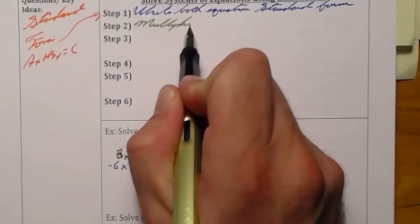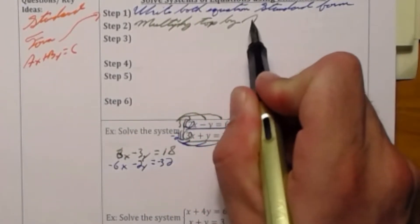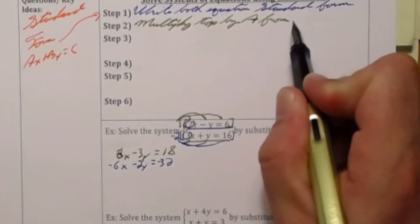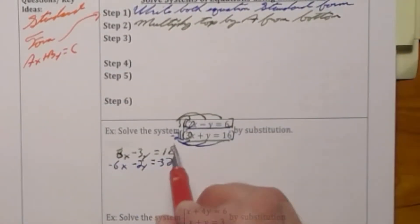My second step being to multiply the top equation by a from the bottom and to multiply the bottom equation by the opposite a from the top equation.